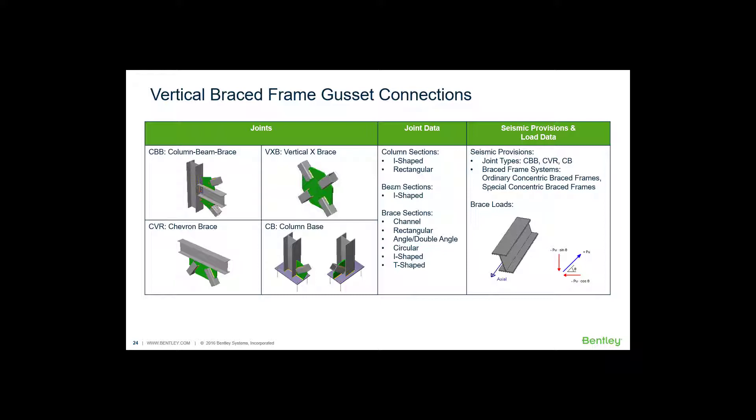In this particular video we are going to be focusing on how to implement the seismic provisions for vertical braced frame gusset connections. In RAM Connections Standalone you can assign seismic provisions to a column beam brace joint, a chevron brace joint, and a column base joint. We have both ordinary concentric braced frames and special concentric braced frames available.